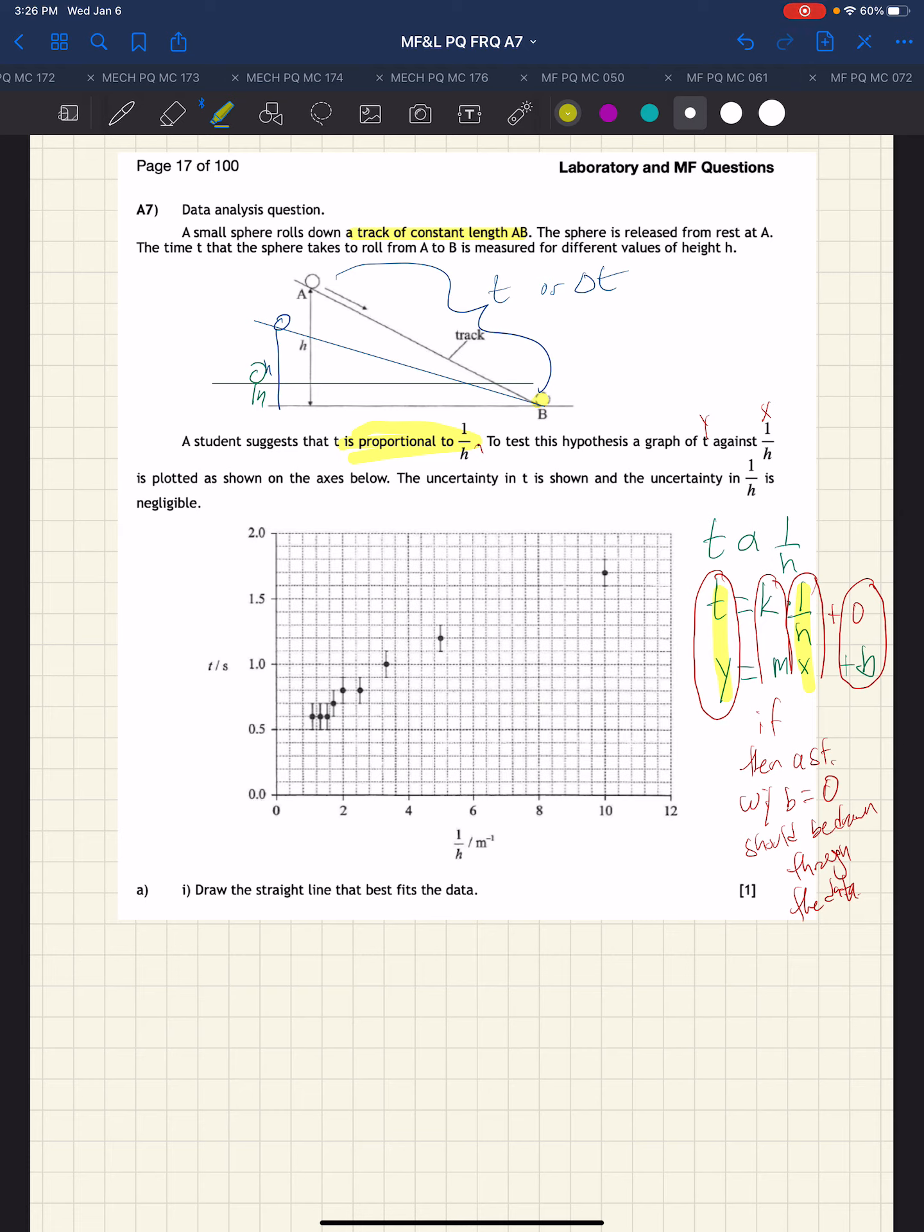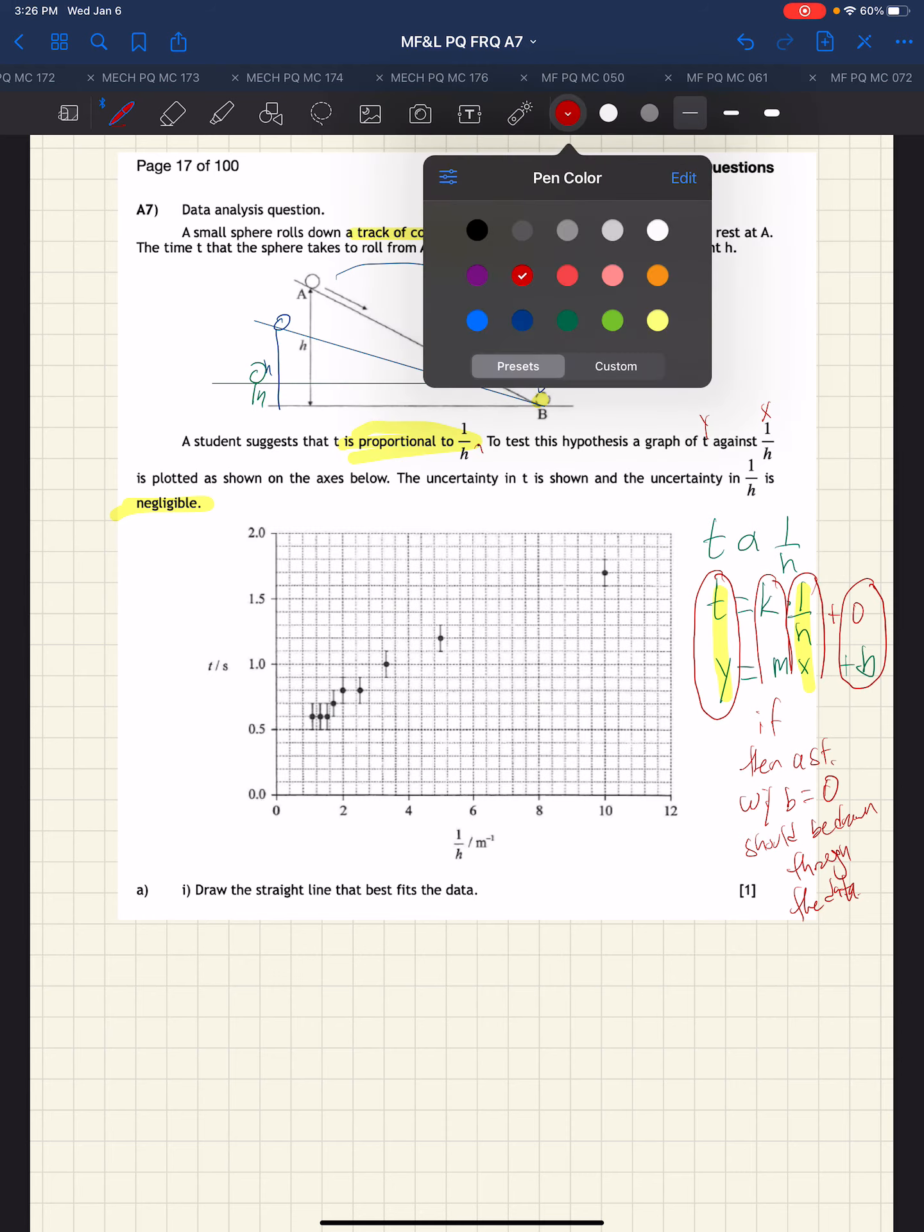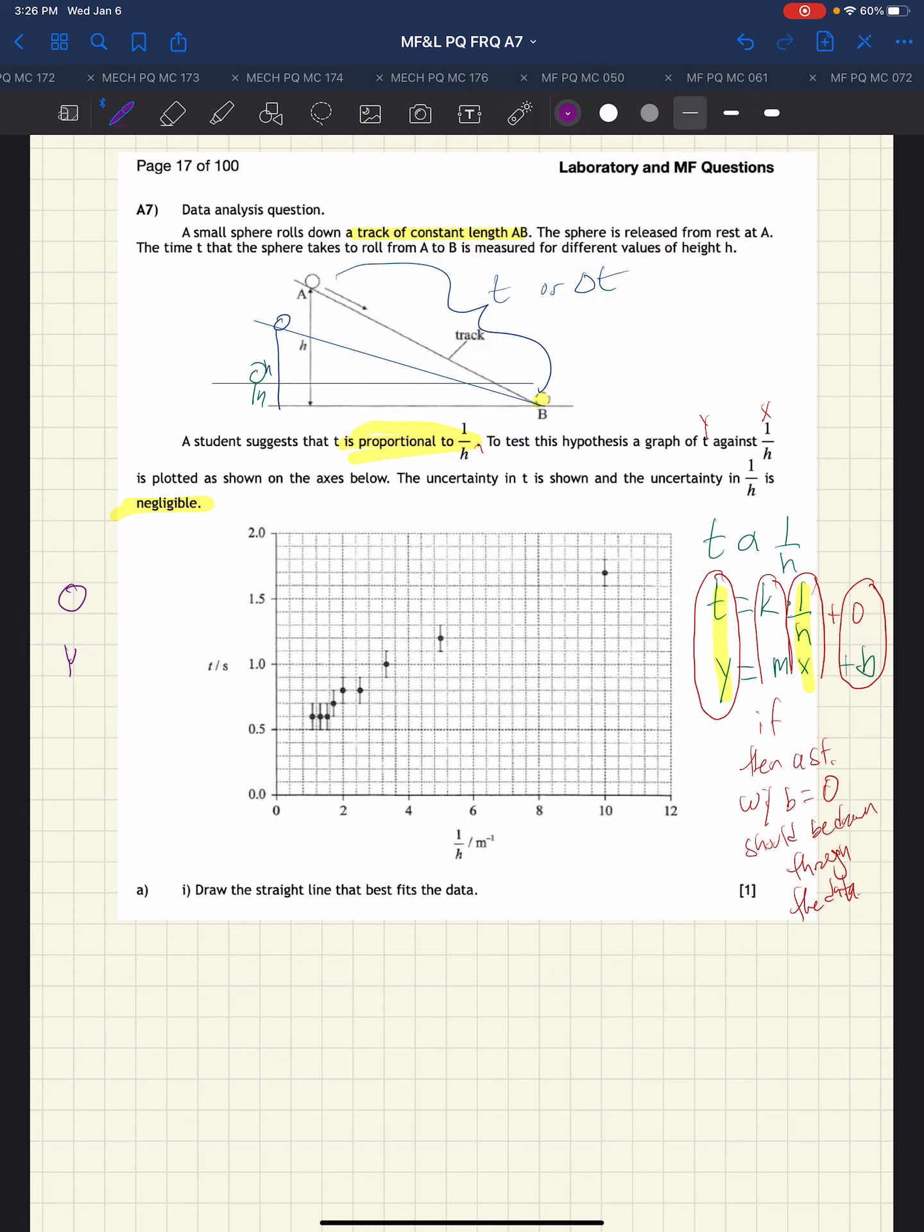The uncertainty in T is shown, and the uncertainty of 1 over H is negligible. So now we have the graph. We will perform an Oiserga analysis. The origin is 0, 0. So we are located in the coordinate plane right there in quadrant 1. The Y-axis is time in seconds, and we see here to here is 0.5, 0.6, 0.7, 0.8, 0.9. So this goes by 0.1 seconds.